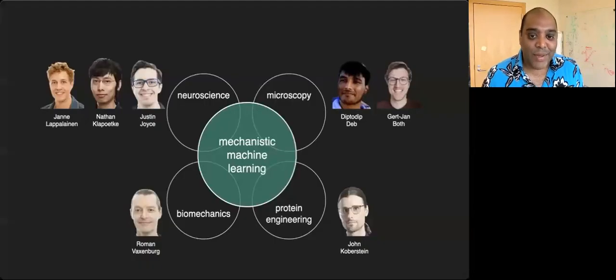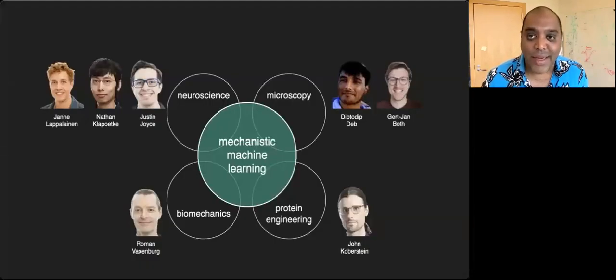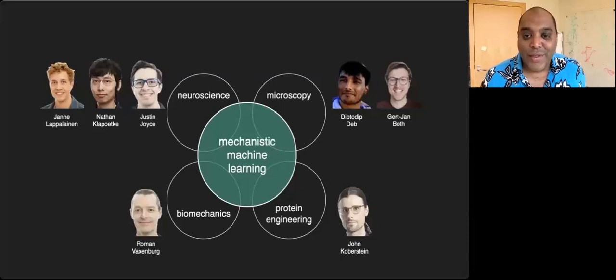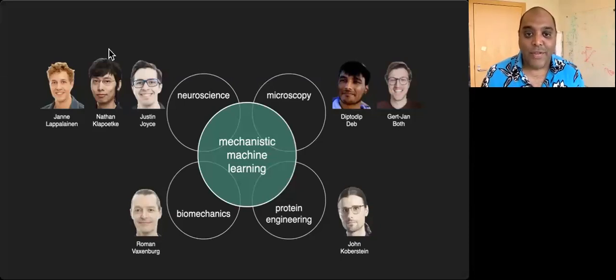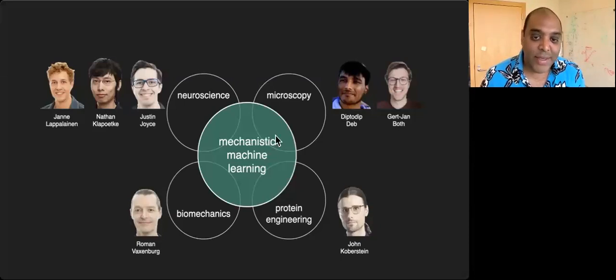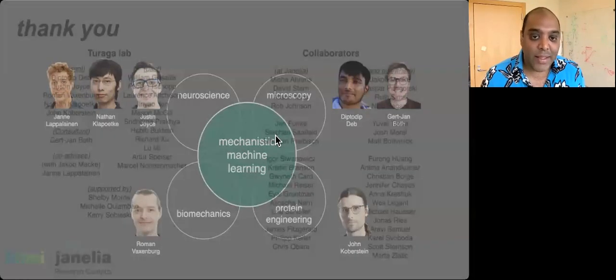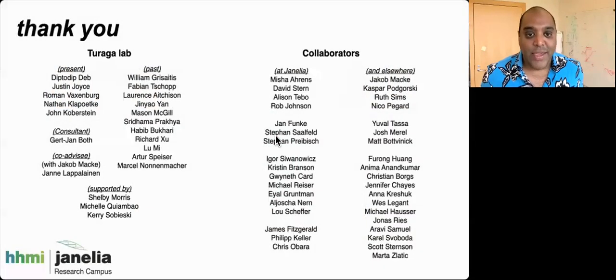That's the vision we have for the future of neuroscience: bringing neuroscience into the age of big models, just like machine learning, where big models need big data to constrain them. We now have a lot of data: neural activity measurements, connectomics, and behavior. Bringing all this together, we can build big models. With that, I'll conclude and take questions.